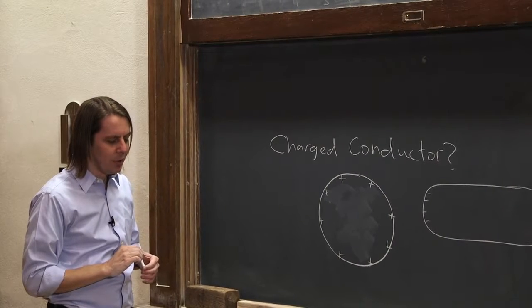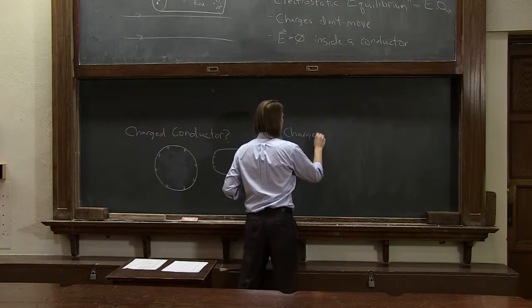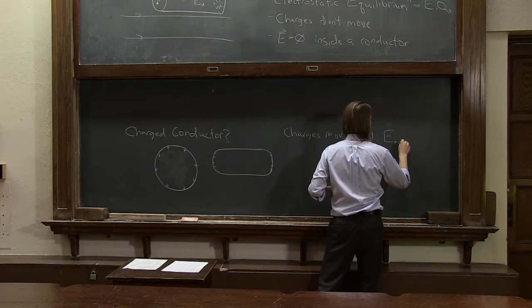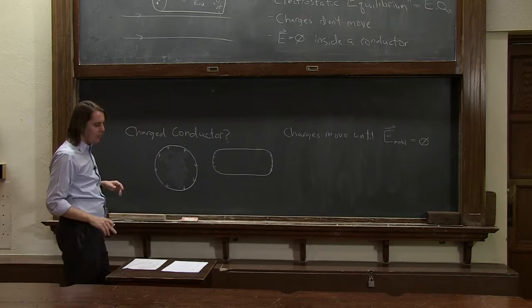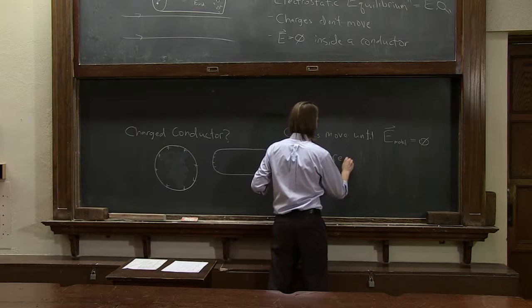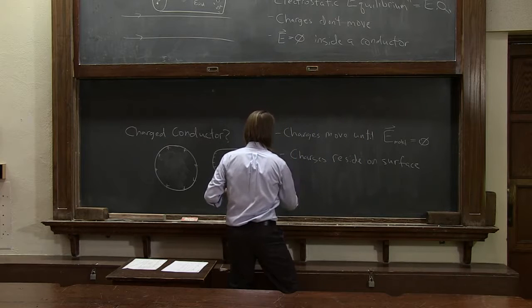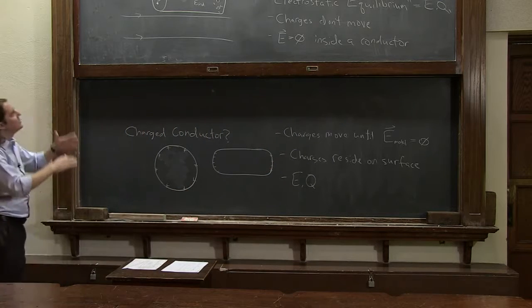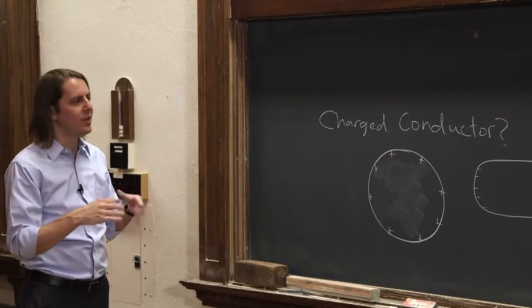So in a charged conductor, you have a fairly similar situation. The charges move until E in the metal equals zero. They reside on the surface, and the charges reside on the surface, even if it's excess charges. And this all assumes that we've reached an electrostatic equilibrium. So my point really is just that a neutral conductor or a charged conductor, it doesn't make a difference. It's always the case that in a conductor, in equilibrium, you'll always have the field inside be zero.